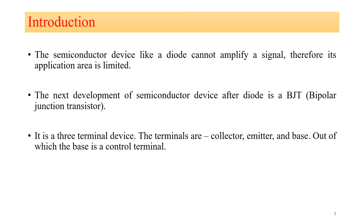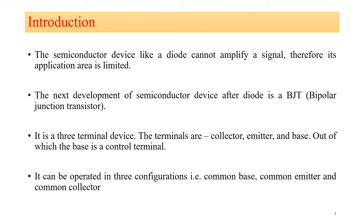The transistor is basically a three-terminal device. The terminals are the collector, emitter, and base, out of which the base is the control terminal. Since there are three terminals — collector, emitter, and base — you can operate your transistor in three configurations: common base configuration, common emitter configuration, and common collector configuration.